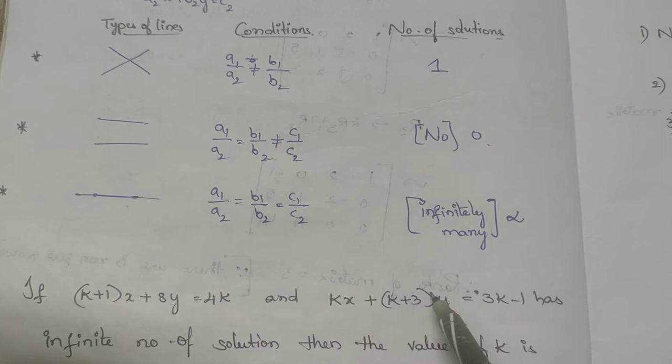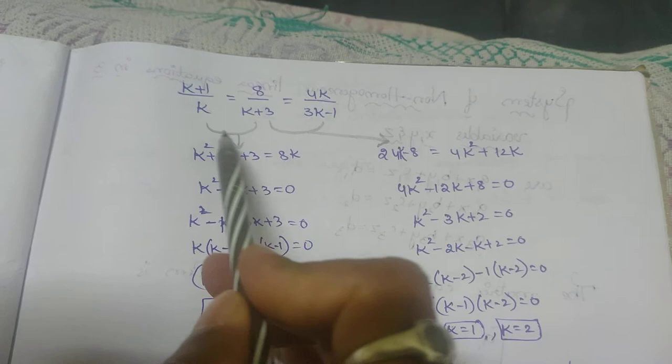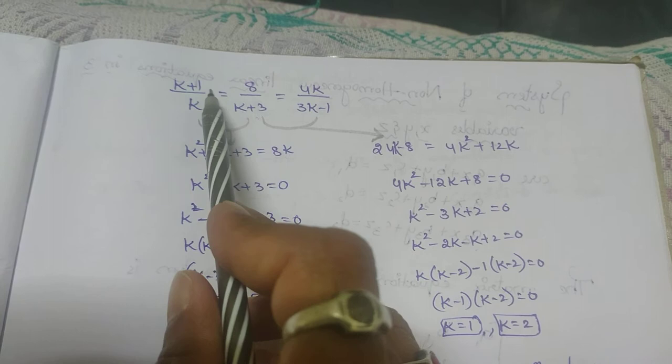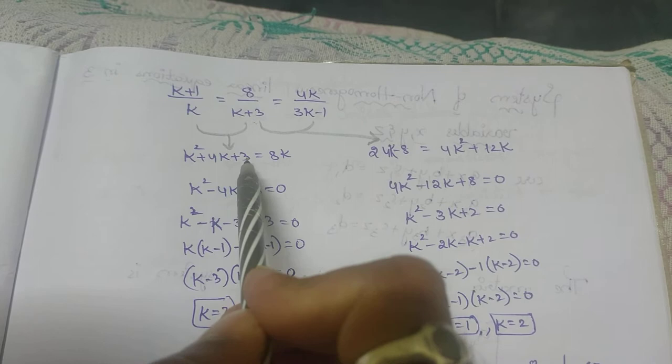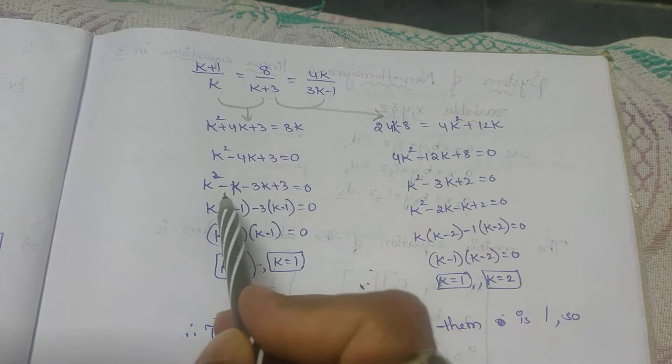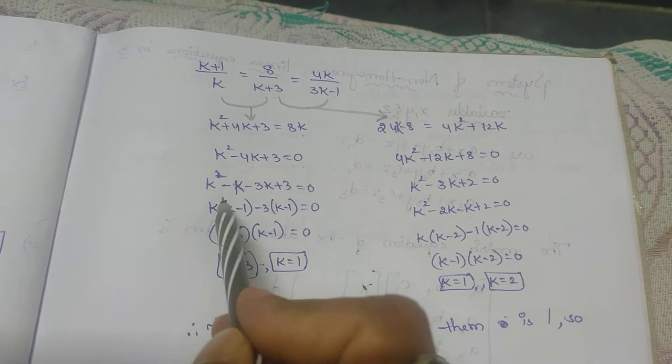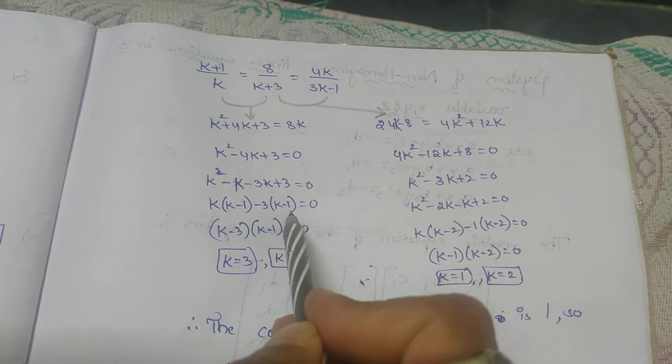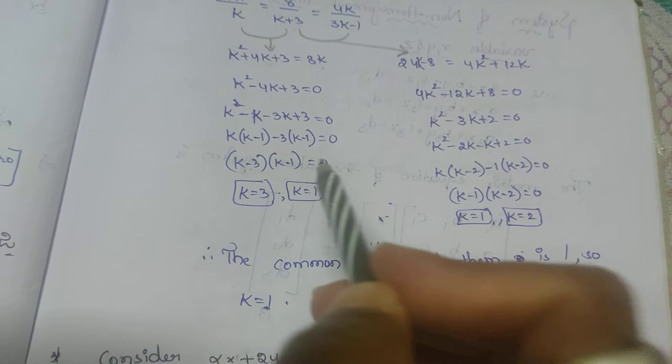Using cross multiplication on the first two ratios: k² + 3k + k + 3 gives k² + 4k + 3, and it equals 8k. Transferring: k² + 4k − 8k + 3 = 0, so k² − 4k + 3 = 0. Factorizing: k² − k − 3k + 3 = 0, giving (k−1)(k−3) = 0. Therefore k = 1 or k = 3.